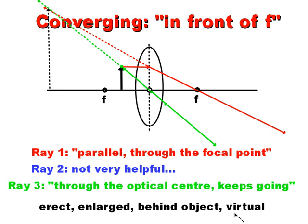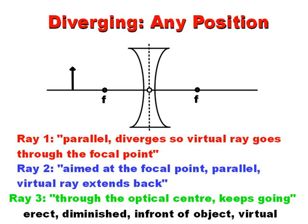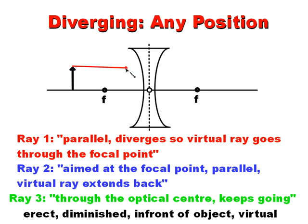There's only one last scenario: the diverging lens. A diverging lens, as the name suggests, is going to spread the light out. We'll use the same ideas as before with a small modification. The first ray goes parallel, hits the lens, but it's not going to go through the focal point — because that would be converging. It diverges in such a way that if you extend the line back as a virtual ray, it would go through the focal point on this side.